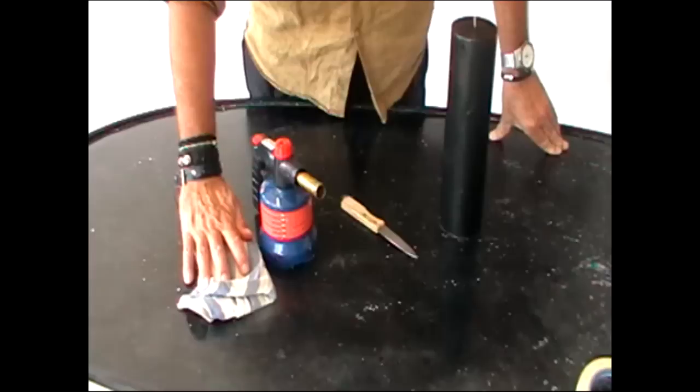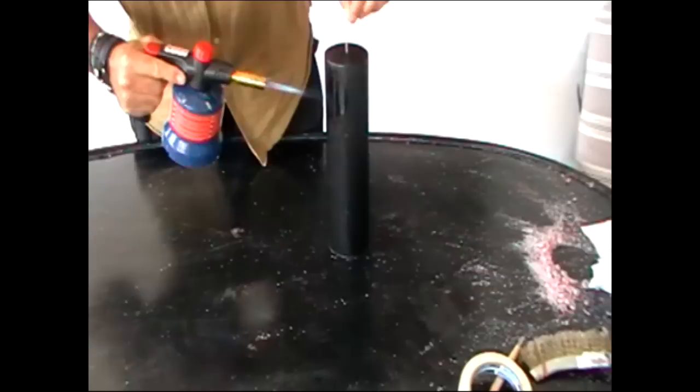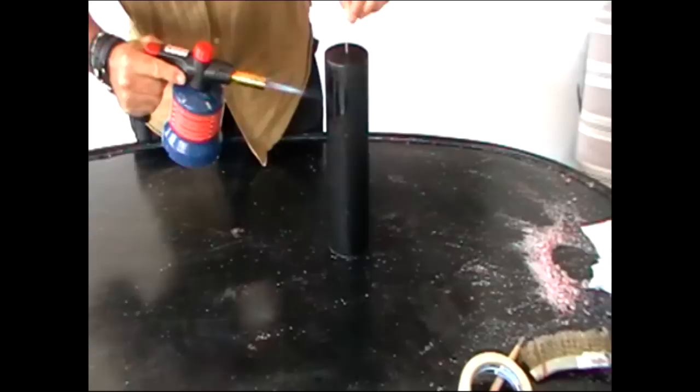The first thing we do is to smooth off and to heat the candle. Starting at the top and working all the way down to create a smooth finish on the candle.